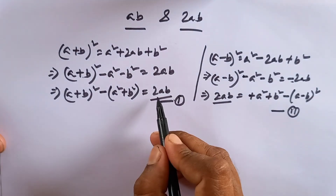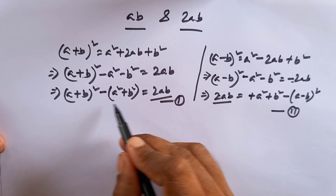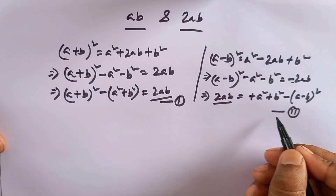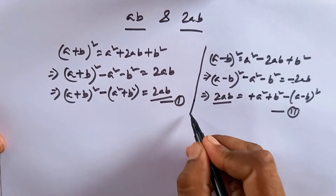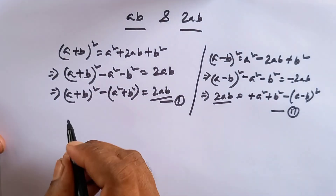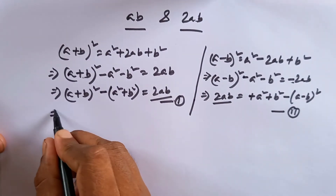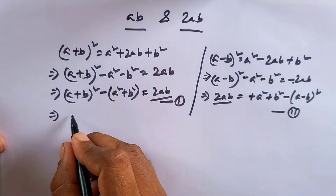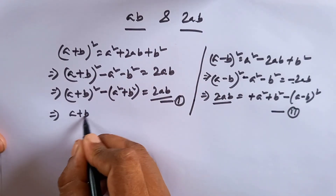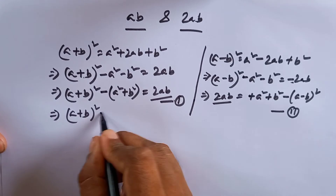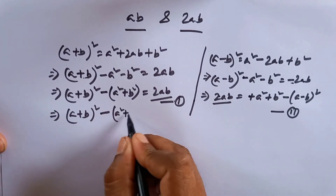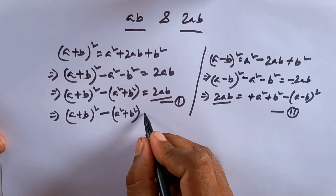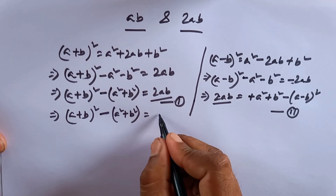So the first formula of 2AB is this and the second formula of 2AB is this. Now, what is the formula of AB? A plus B whole square minus A squared minus B squared equals 2AB.